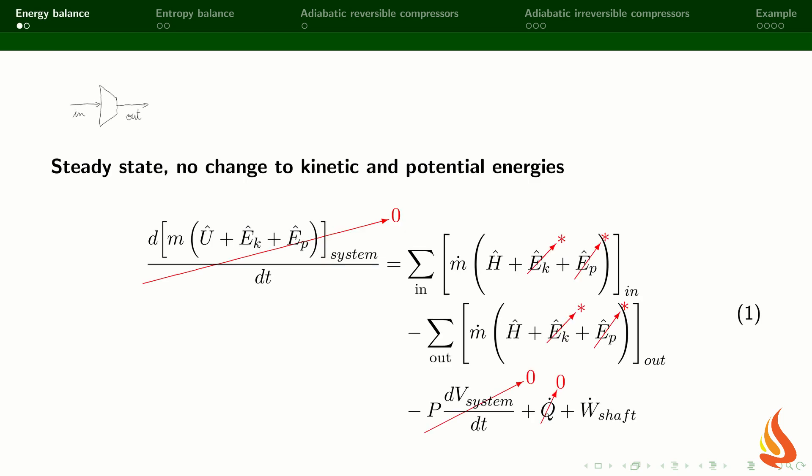Compressors will normally have one input and one output stream. When they operate at steady state, the flow rate of the input and output streams has to be the same. This is as much as we can learn from the mass balance.